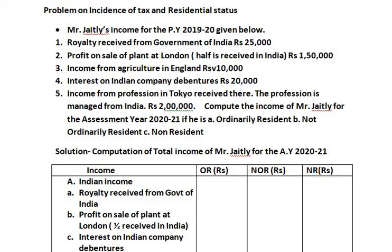Next is foreign income. Incomes which are earned in a foreign country are known as foreign income. Foreign income has two classifications. First: income earned and received in a foreign country but where the business is managed from India — this is taxed in the hands of both ordinarily resident and not ordinarily resident. Second: income earned and received in a foreign country where the business or profession is also managed from the foreign country.